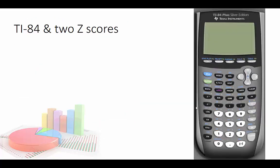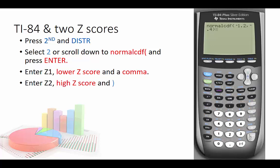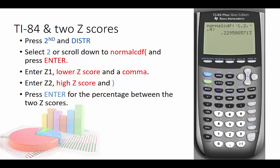Most of the time you're going to use a calculator to do your two z-scores. Press 2nd and distribution to find normalcdf, scroll down and hit enter, and enter your lower z-score and a comma. Our lower z-score was negative 1.2, then comma, the high z-score which is negative 0.4, close parentheses, and hit enter. You'll notice it gives the same answer. I also recommend drawing and shading.